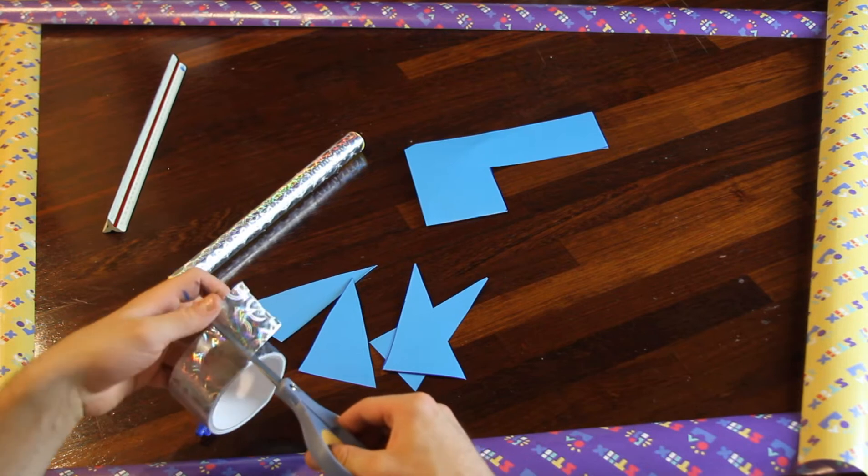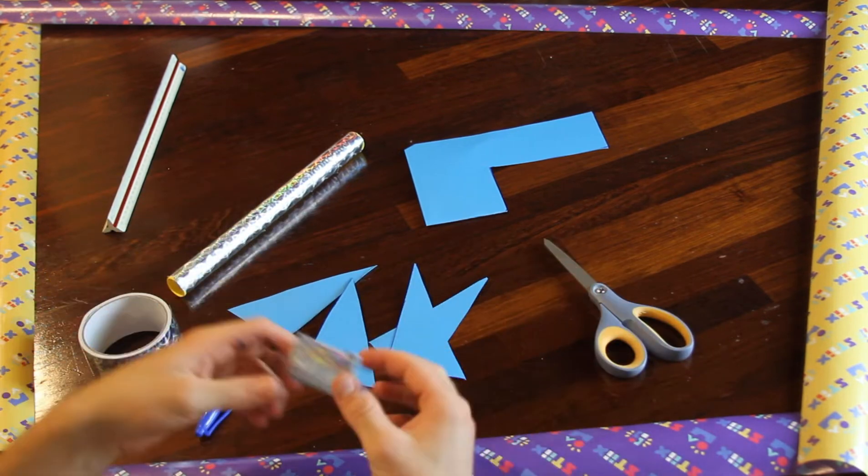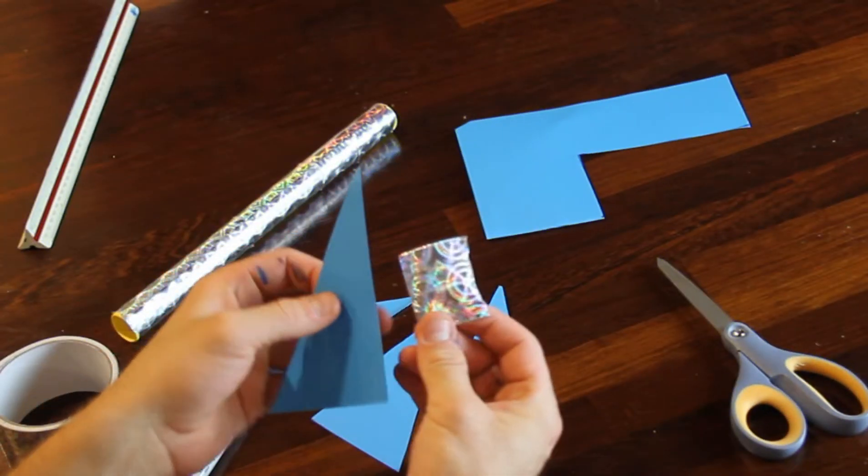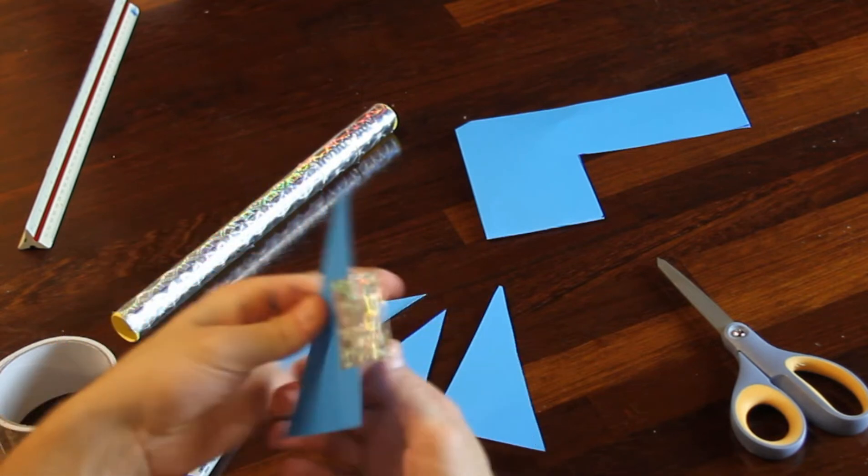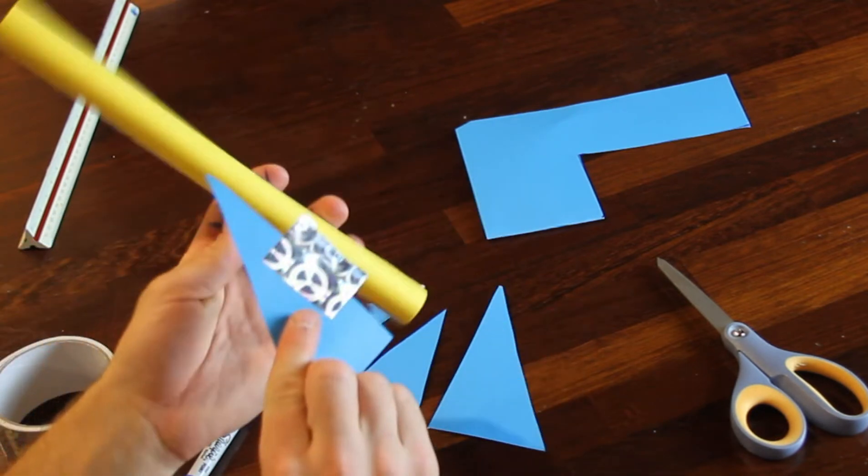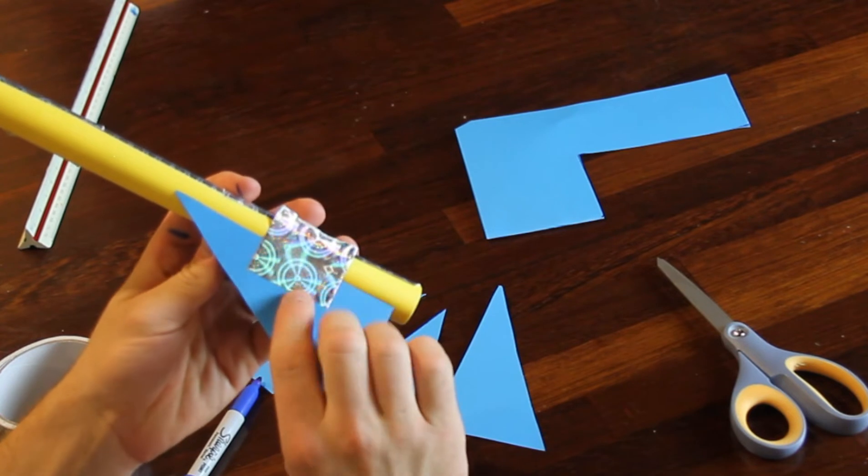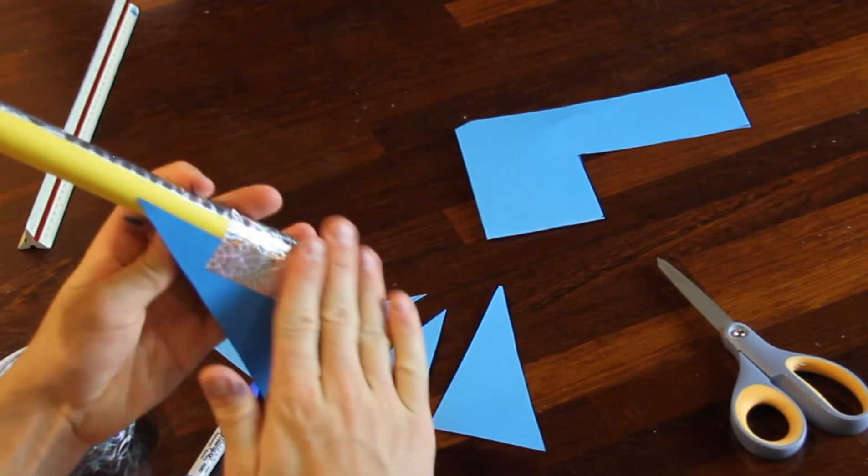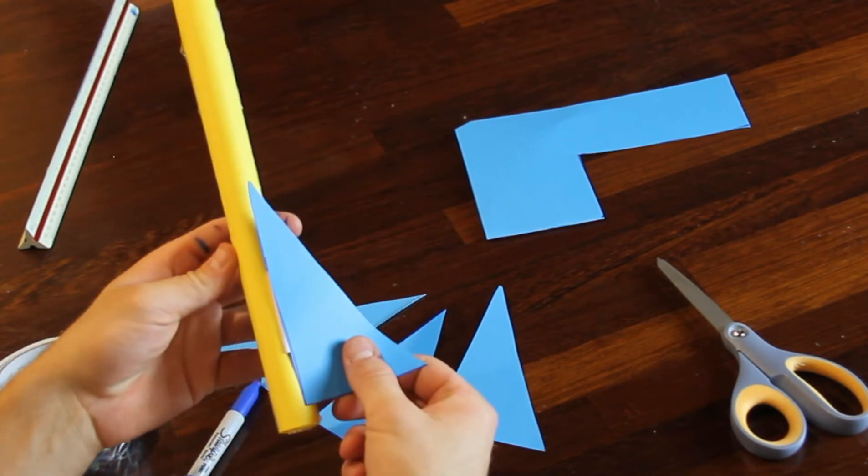Here we're going to use the duct tape, and you need two small pieces for each fin you're attaching. Take that piece of tape and place it half on, half off your fin, and that second half is going to be the part that attaches to your rocket's body. Remember, we're definitely favoring the lower half of the rocket so it provides stability in flight.